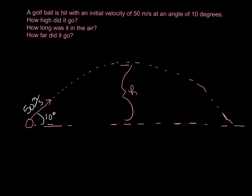This problem does have an initial y-velocity. We have a golf ball hit with an initial velocity of 50 meters per second at an angle of 10 degrees. How high did it go, how long was it in the air, and how far did it go? With just that little bit of information, you can find the answers to all of those questions.